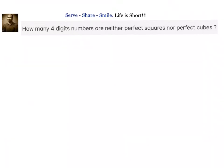Hello friends, welcome back. Let us look at this problem: we have to find out how many four-digit numbers are neither perfect squares nor perfect cubes. First we have to understand how many four-digit numbers there are, then how many perfect squares there are, then how many perfect cubes, and once we have found all these separately, we should be able to find the answer.